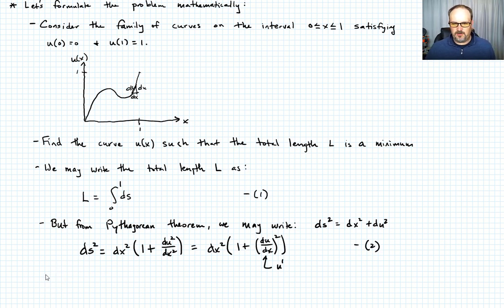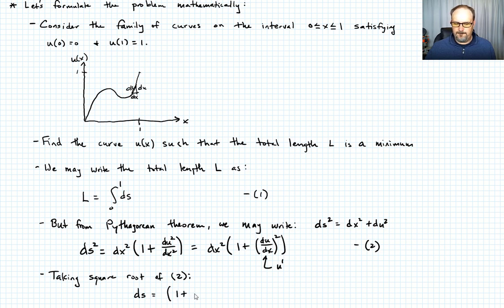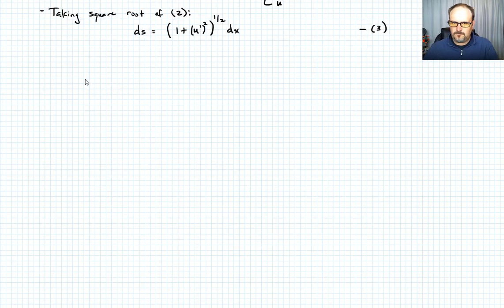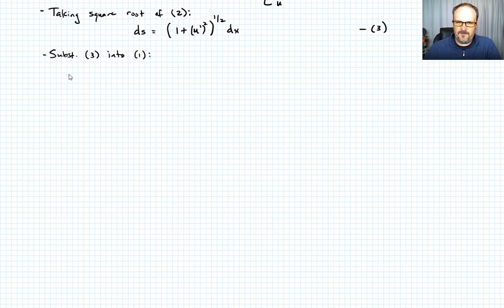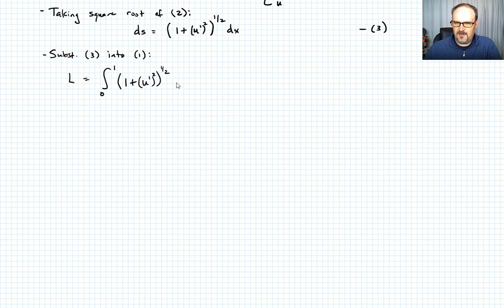Taking the square root of equation 2, ds equals (1 plus u prime squared) to the one-half times dx — call that equation 3. Substituting equation 3 into equation 1, we have that L equals the integral from 0 to 1 of (1 plus u prime squared) to the one-half dx — call that equation 4.